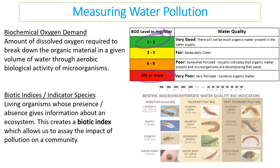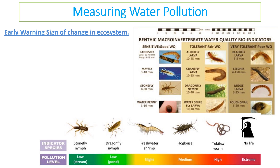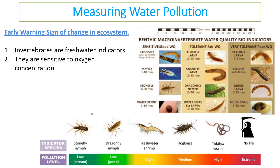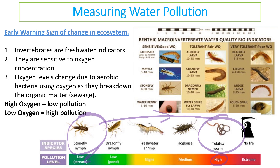We can also use biological indicator species — generally invertebrates in freshwater — which live in areas ranging from cleaner to less clean water. We can identify which species live where, telling us how clean the environment is. Biological indicators are often an early sign of ecosystem change because they are the most sensitive organisms. For example, the stonefly nymph needs high oxygen as it lives in low-pollution areas, while the tubifex worm can survive very low oxygen levels because it tolerates pollution. High oxygen always means low pollution; low oxygen means high pollution.